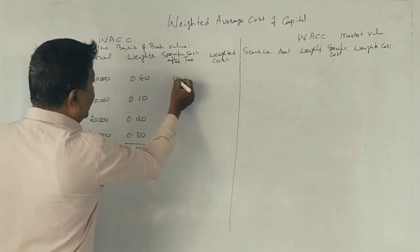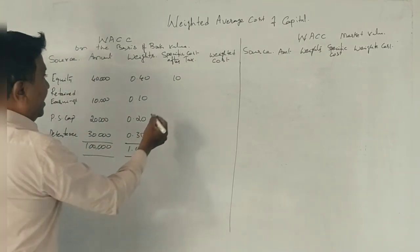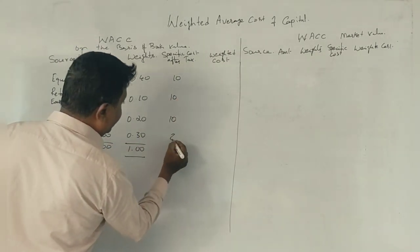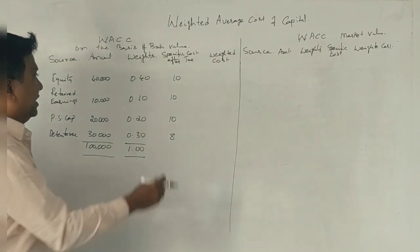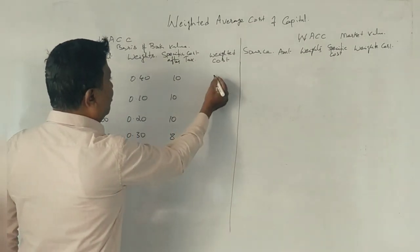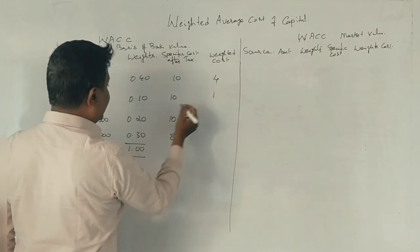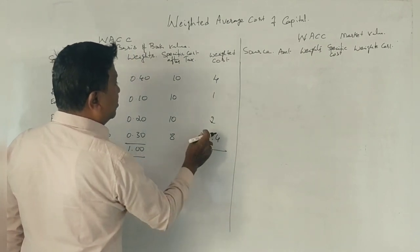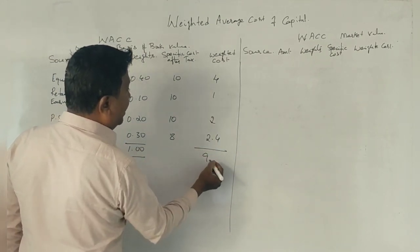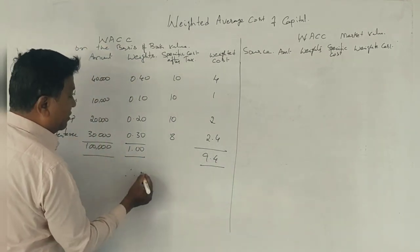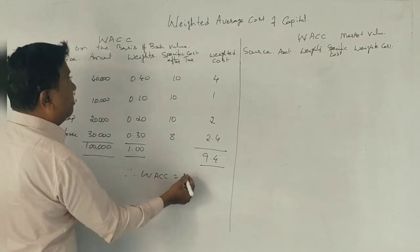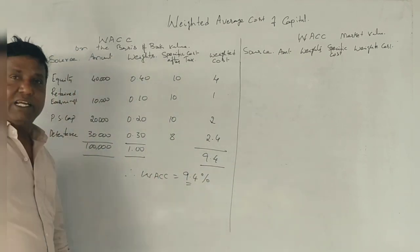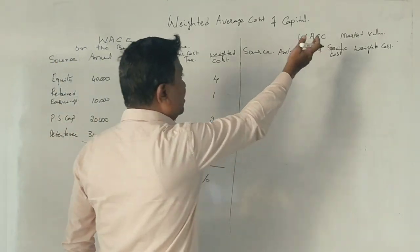Equity cost is 10%, retained earnings 10%, preferential 10%, and debentures model is 8%. So: 0.40 × 10 = 4%, retained earnings 0.10 × 10 = 1%, preference 0.20 × 10 = 2%, debentures 0.30 × 8 = 2.4%. Total weighted average cost of capital on the basis of book value is 9.4%.